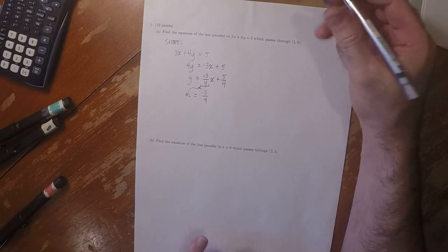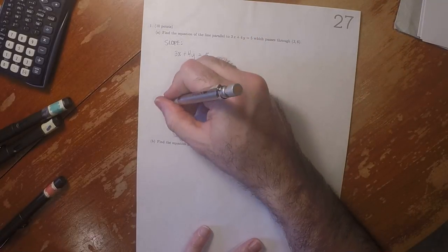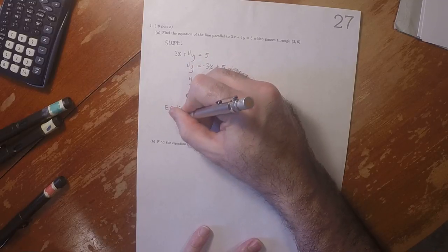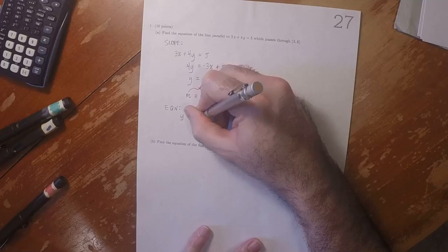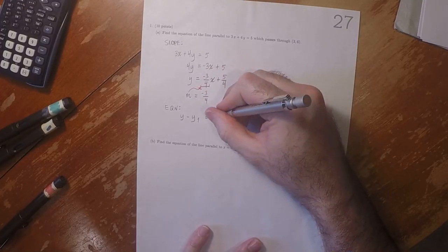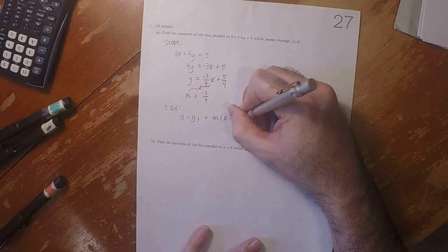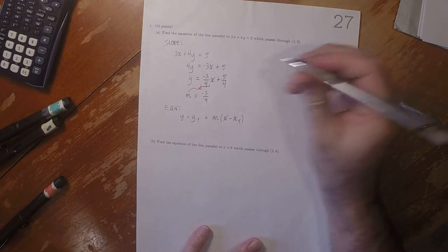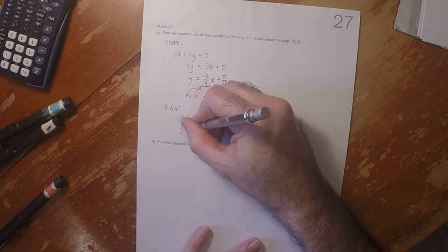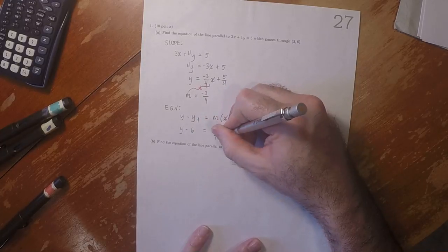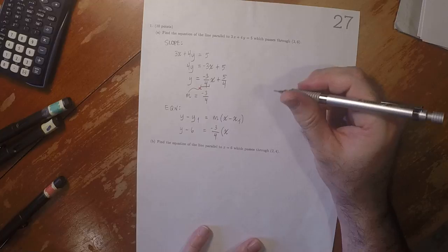So now we have a point and a slope. So now we can come up with the equation. y minus y1 is m multiplied by x minus x1. So y minus 6 is negative 3 fourths x minus 3.